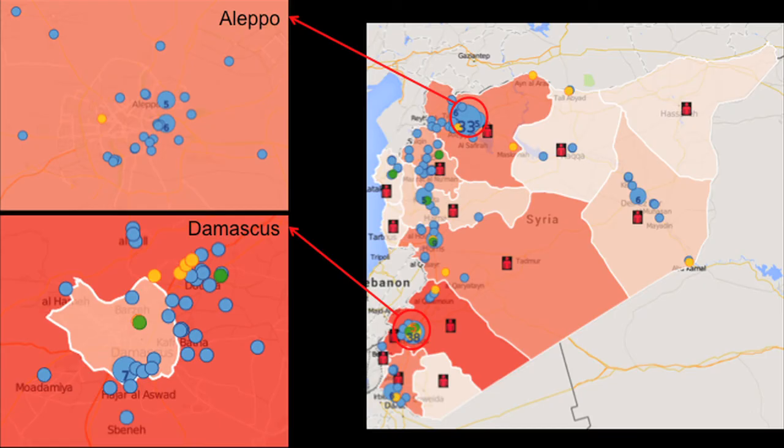The green points represent attacks by forces that we haven't been able to identify. We are only documenting attacks on functioning medical facilities and those that we have reasonable belief occurred. The shading on the map represents the number of medical personnel who have been killed.